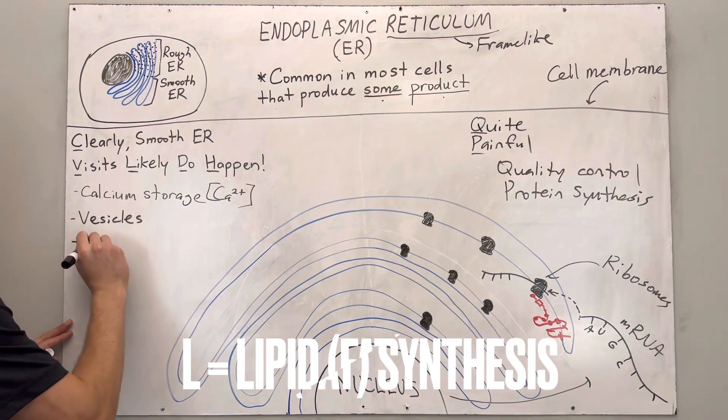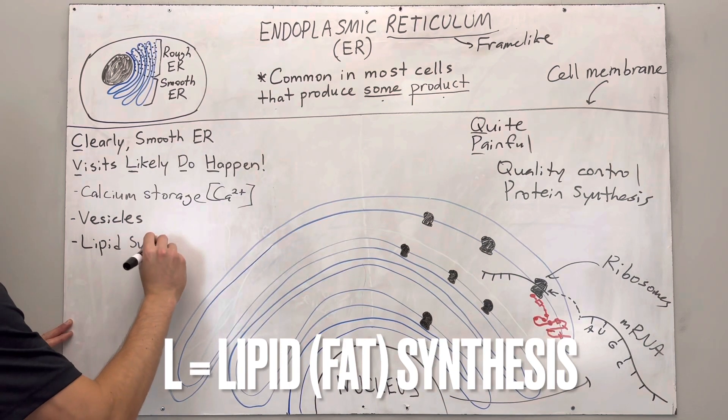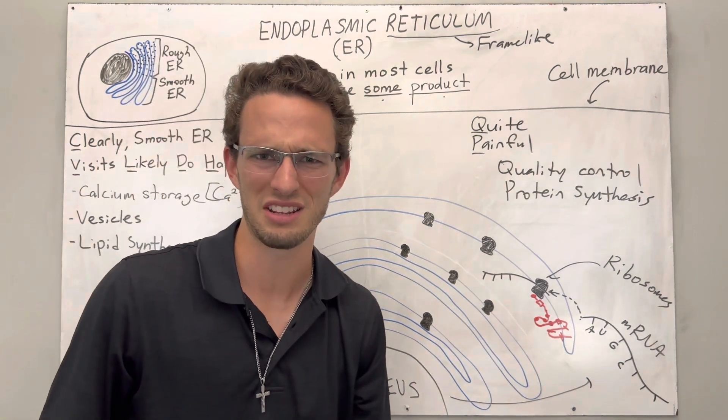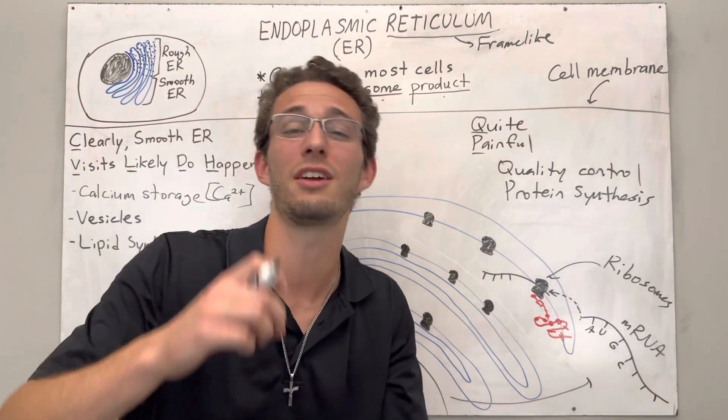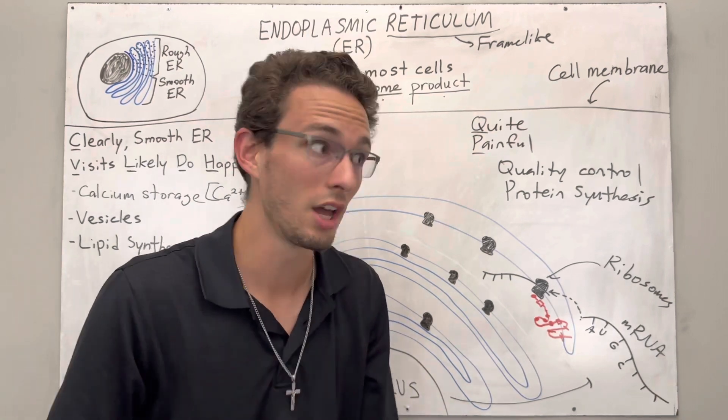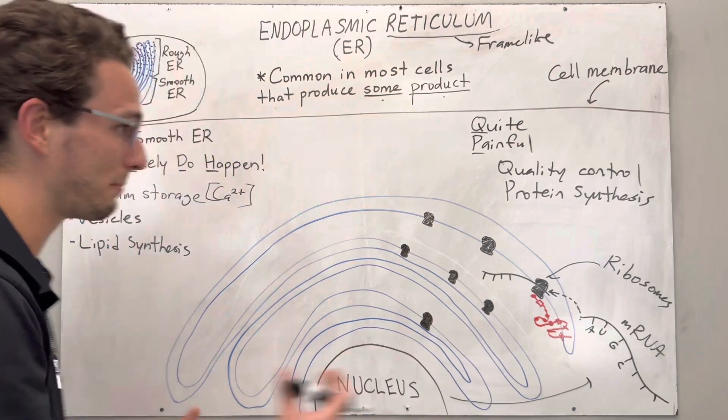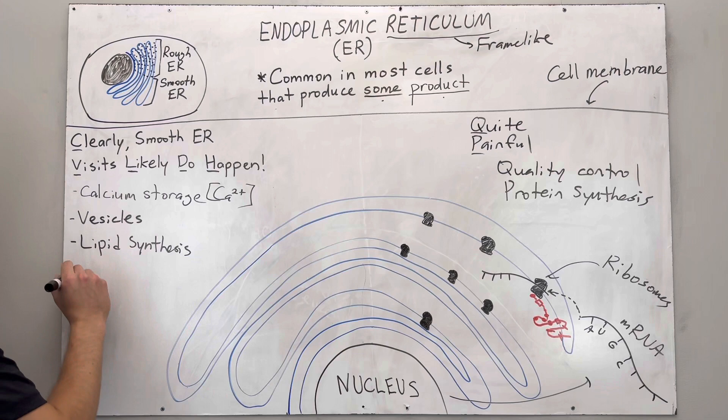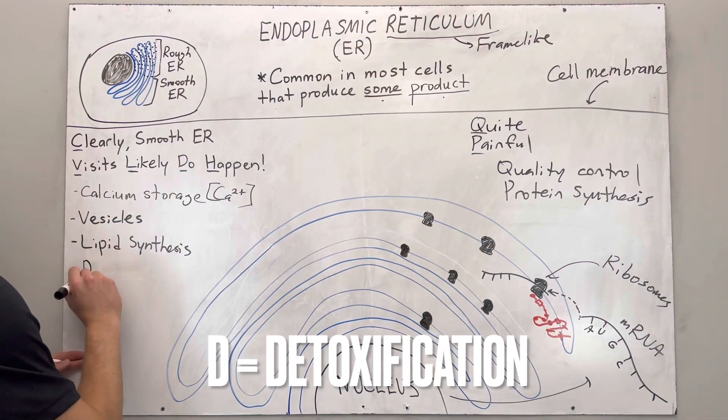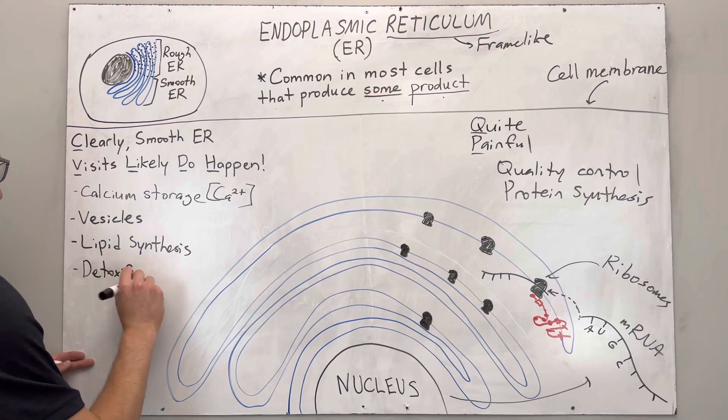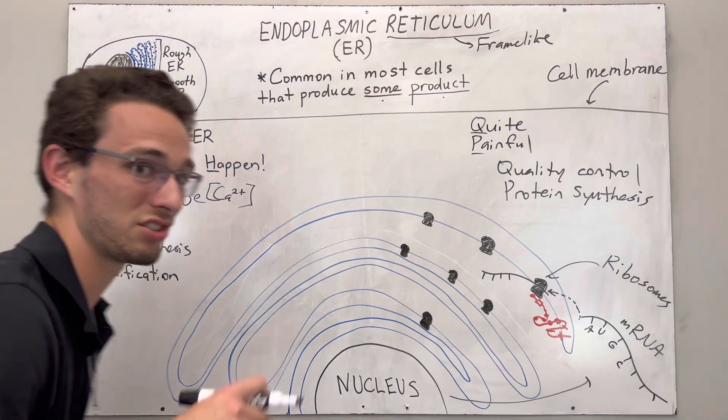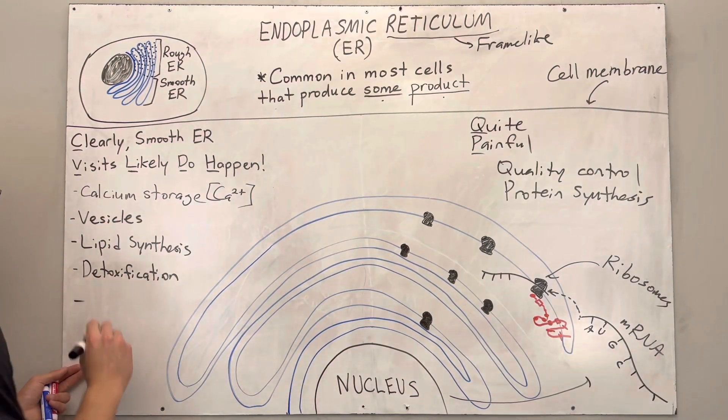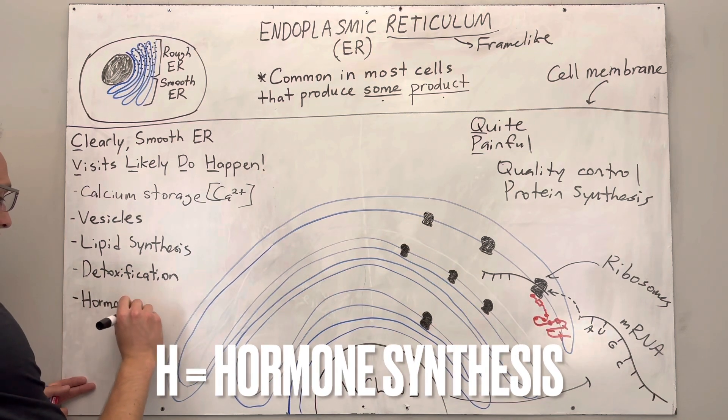L likely stands for lipid synthesis. What are lipids? Any sort of fats. Now what's interesting is fats are usually said like, oh, they're bad, right? They're high calorie, what have you? Well, there's a lot of fats in your body that are really beneficial. Things like steroid hormones, sex hormones, those types of things that help your body basically function properly. So really important thing there. The other two, the D stands for detoxification. Anytime anything gets into your cells that needs to basically be eliminated because it's dangerous will be done by the smooth ER. And then lastly, H, H stands for hormone synthesis as well.